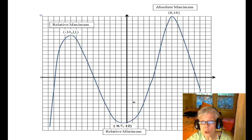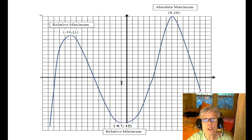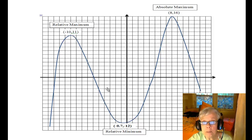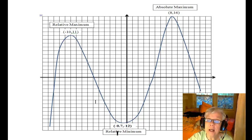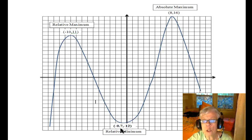This point in its own little neighborhood is the lowest point. We call it the relative minimum. The relative minimum is the y-coordinate negative 12, just like the relative maximum was the y-coordinate 11. We say that the maximum or the minimum occur at the x-coordinate, so the relative minimum of negative 12 occurs at x equals negative 0.7, because this is the point (negative 0.7, negative 12).